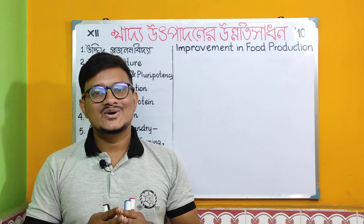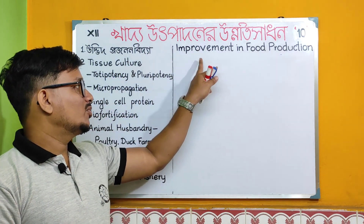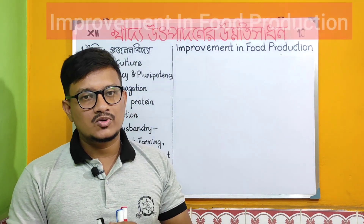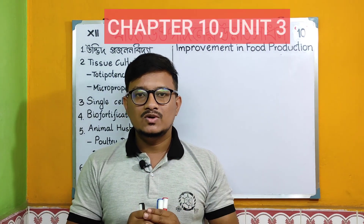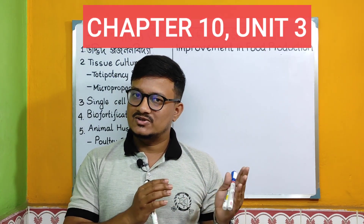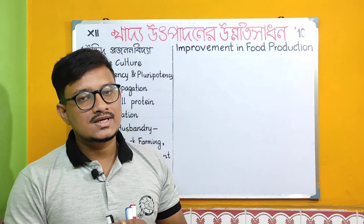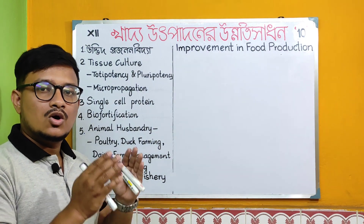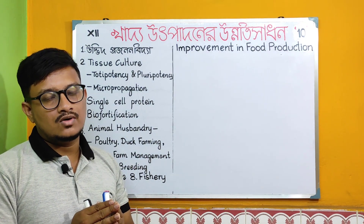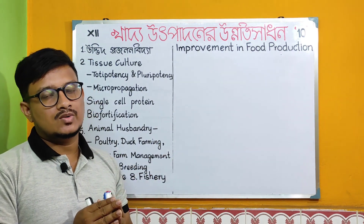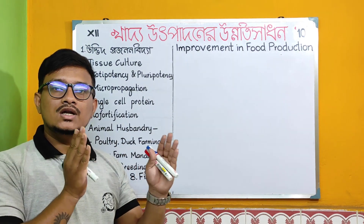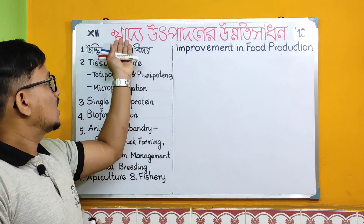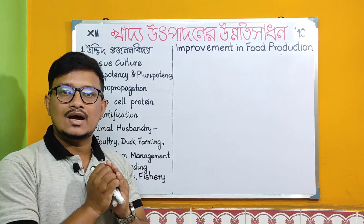Welcome to A Plus Bio. Today's video topic is Improvement in Food Production, that is Chapter number 10, Unit 3, Class 12, subject Biology. In this video is a complete overview of Chapter 10, that is Improvement in Food Production — a basic approach.